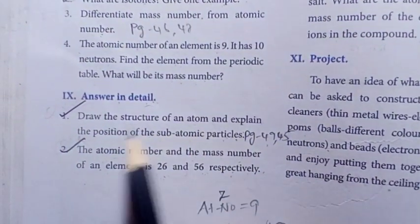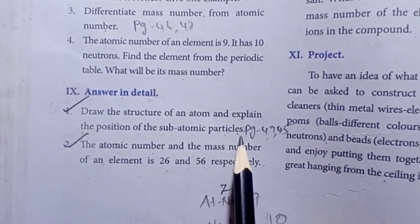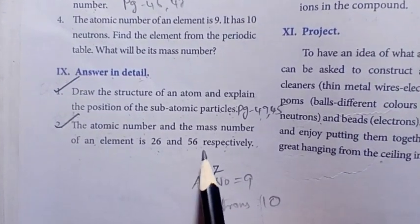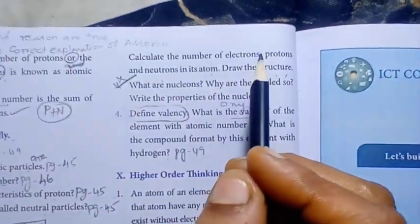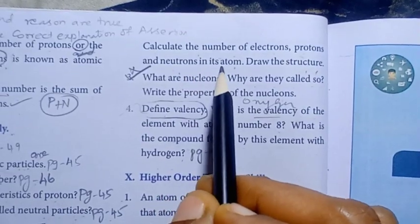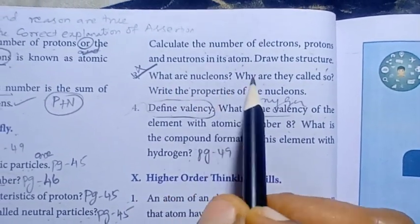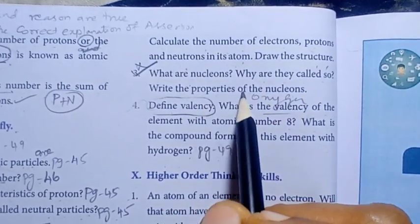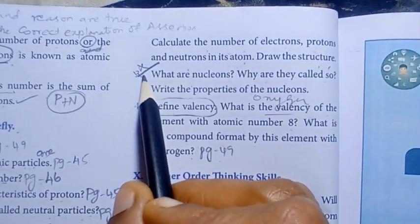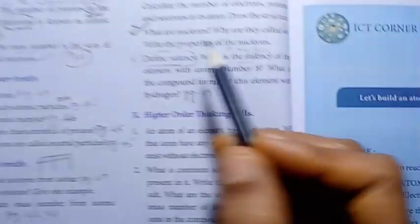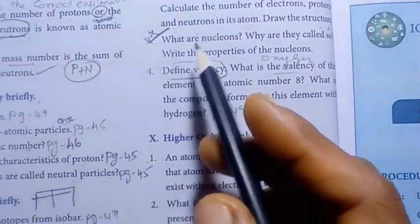Detail: first, second. Draw the structure of an atom. Explain the position of the subatomic particles. Say the atomic number and the mass number of an element is 26 and 56 respectively. Calculate the number of electrons, protons and neutrons in its atom. Draw the structure. Then third one, what are nucleons? Why are they called so? Write the properties of the nucleons.